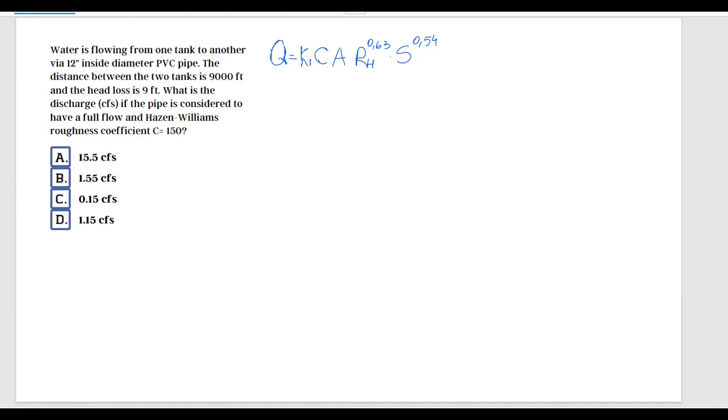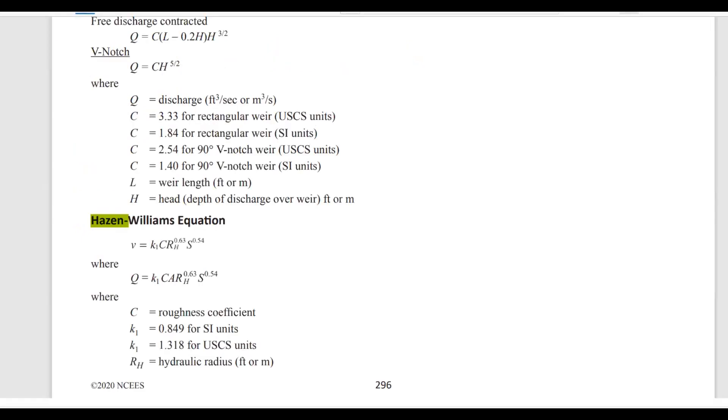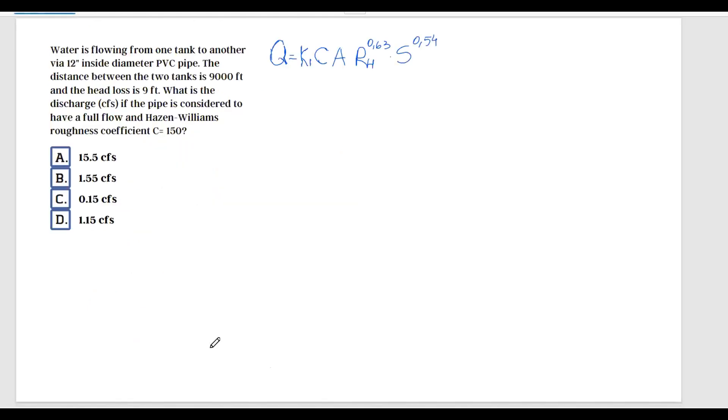We have the formula here, and now let's go over each term and see what we know and what we don't know. K1, if we go back to the FE handbook, is given here as 0.849 for SI units and 1.318 for US units. We're going to use 1.318 since the information here is in feet. So K1 is 1.318, and then we have C given in the problem as 150.